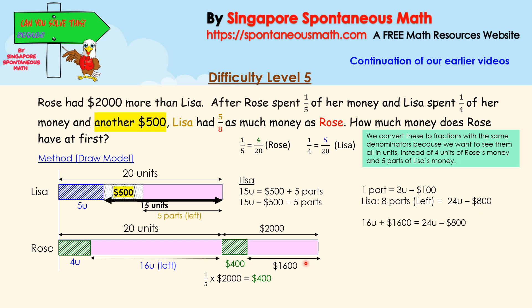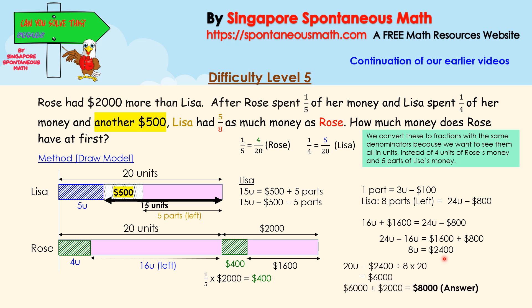Rose had 16 units plus $1,600 left, which equals the 8 parts: 24 units minus $800. So 24 units minus 16 units equals $1,600 plus $800. That means 8 units equals $2,400. So 20 units would be $2,400 divided by 8, times 20, which gives us $6,000. So $6,000 is what Lisa had at first. Rose had $2,000 more, so Rose had $8,000 at first.